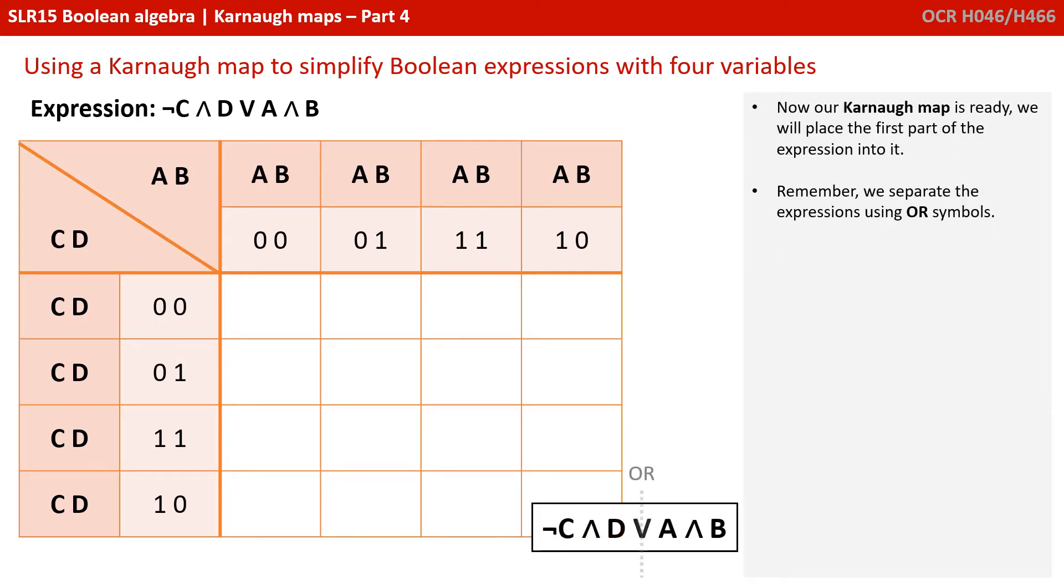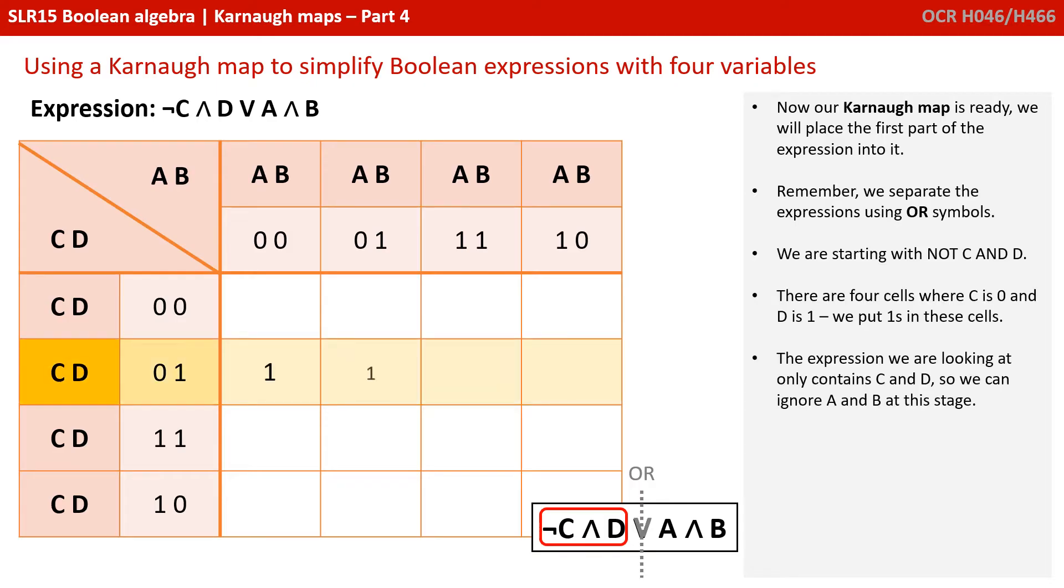Now our Karnaugh map is ready, we will place the first part of our expression into it. Remember, we separate the parts of the expression using the OR symbol. So we're starting with not C and D and there are four cells where C is zero and D is one. So we put one in these cells. The expression we are looking at only contains C and D, so we can ignore A and B at this stage.